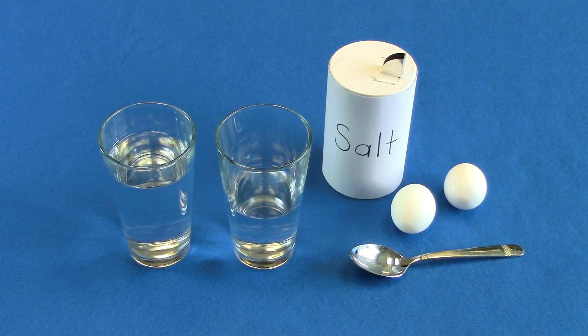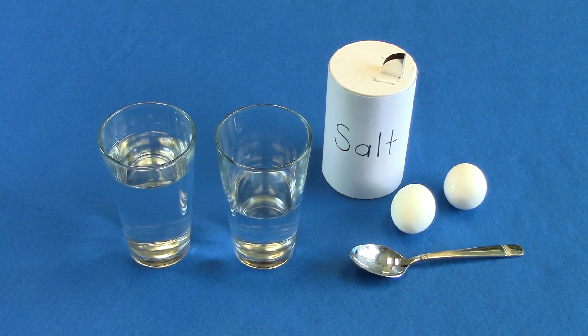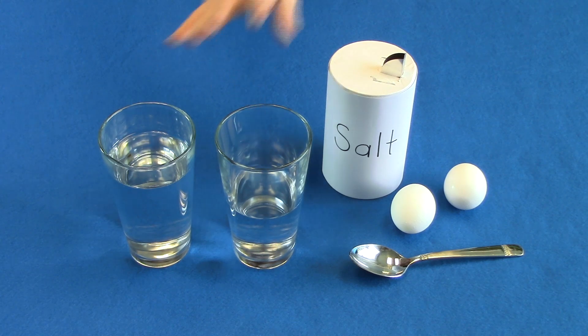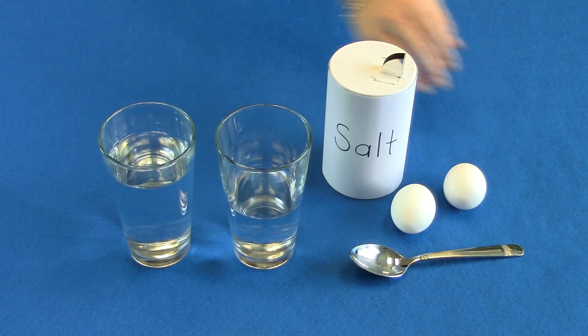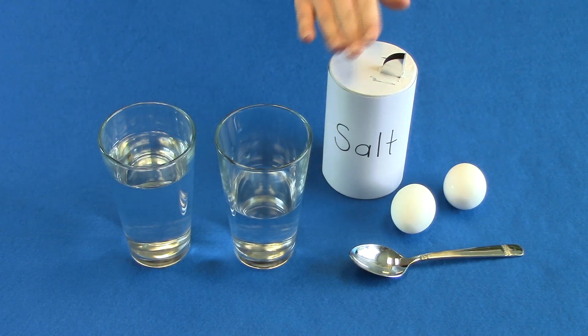You've probably heard of a root beer float, but an egg float? You can try one for yourself with this experiment on density. To do this experiment you will need two tall drinking glasses, two raw eggs, water, salt, and a spoon.